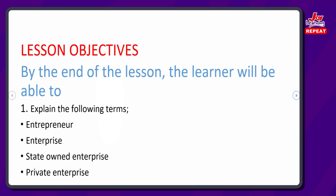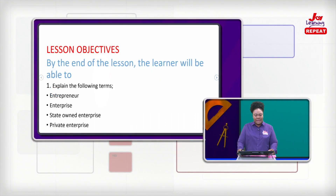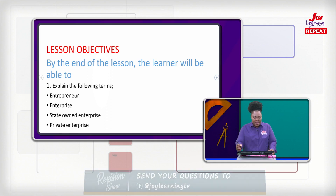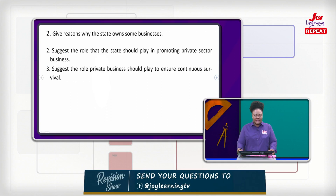By the end of the lesson, the learner will be able to: 1. Explain the following terms: Entrepreneur, Enterprise, State-owned enterprise, and Private enterprise. 2. Give reasons why the state owns some businesses, and suggest the role that the state should play in monitoring private sector businesses.